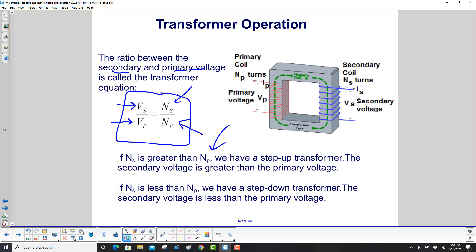If NS is less than NP, and that's the case here, this is NS over here, NP. When you have that, you have a step-down transformer. The secondary voltage is less than the primary voltage. So you would have one of these on the transformer on the pole outside the homes in your neighborhood.